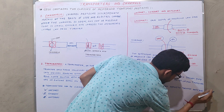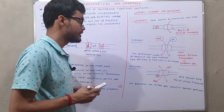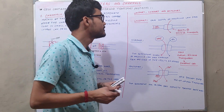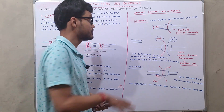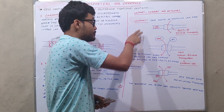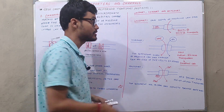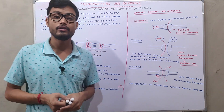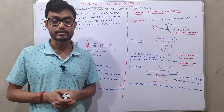So these are the three different types of transporters: uniport, symport, and antiport. If you liked this video, please hit the like button, don't forget to subscribe, and thanks for watching.